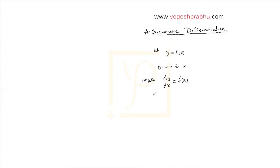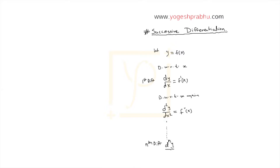Now we can keep on doing this — we can differentiate with respect to x again. If we differentiate again, we get the double derivative, that is d-squared y by dx-squared, and that is f double-dash of x — the second derivative. You can keep differentiating again and again. The nth differentiation is d-n y upon dx raised to n, or we write f-n of x. This is basically called successive differentiation.